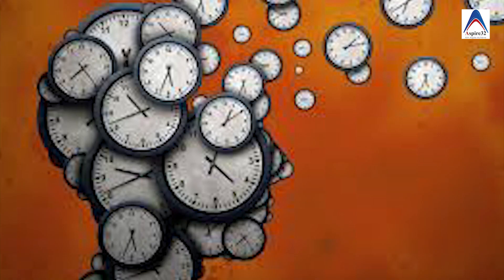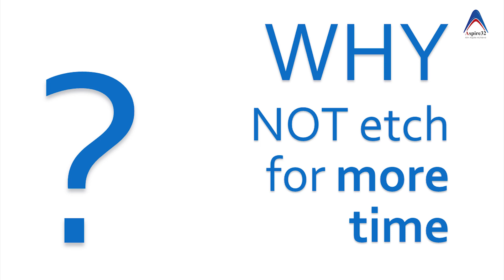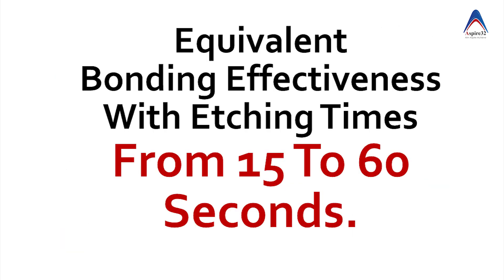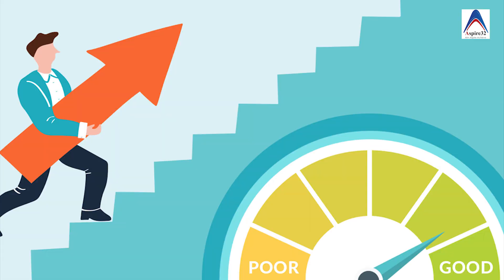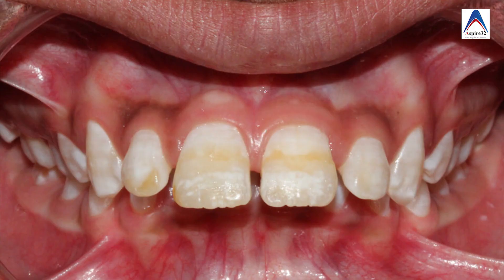Most textbooks recommend a 15-second application time for the etchant. Research has found that the bond strength achieved at 15 seconds and at 60 seconds are the same, so there is no need to apply it for a longer duration — unless you are doing etchant application on a deciduous tooth or a tooth affected by fluorosis, in which case you will have to etch for more than 60 seconds in order to improve the bonding.